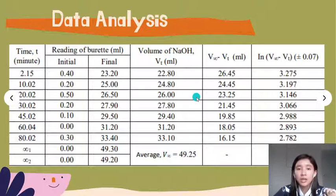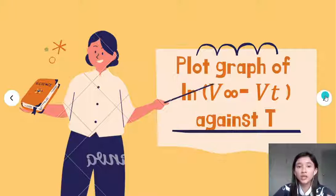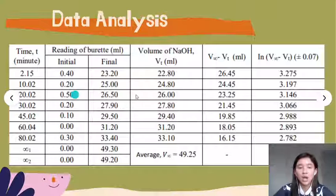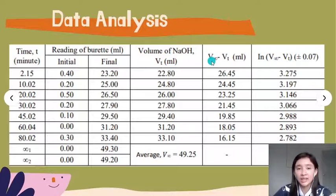Based on the question above, it asks us to plot a graph of ln(V∞ - Vt) against t. We need to find what is V∞ and Vt. How to find V∞? V∞ is the average of Vt used. It's the sum of this data divided by 7, which gives us V∞.